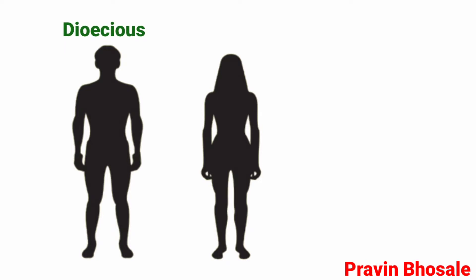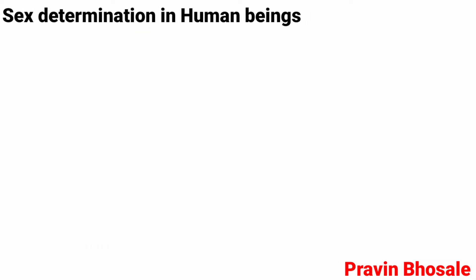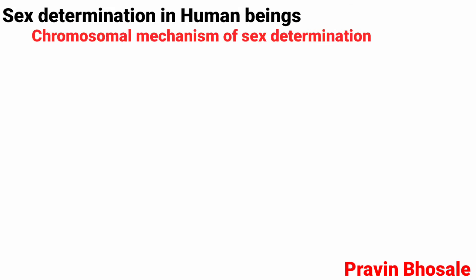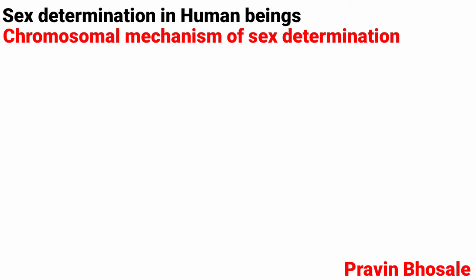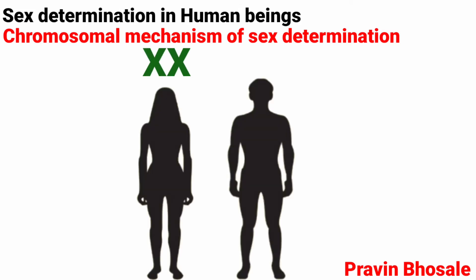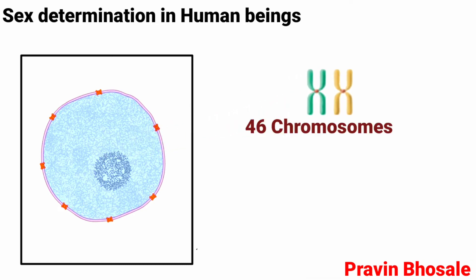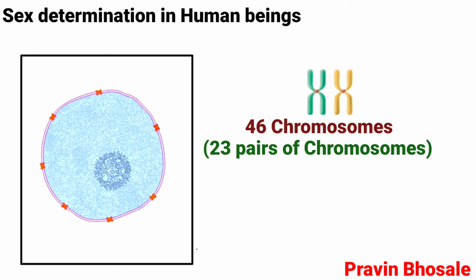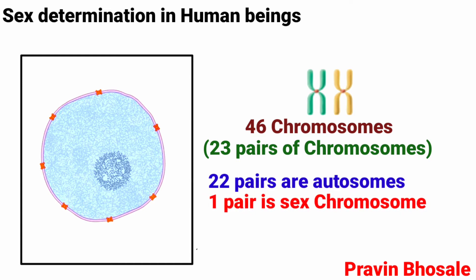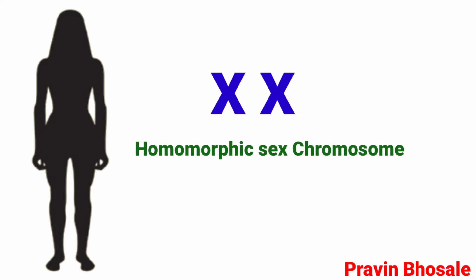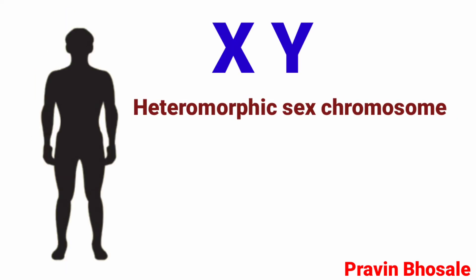Humans are dioecious. The chromosomal mechanism of sex determination in human beings is XX-XY type. In human beings, the nucleus of each somatic cell contains 46 chromosomes or 23 pairs of chromosomes. Out of these, 22 pairs are autosomes and one pair is sex chromosomes. Human female has a pair of XX, homomorphic sex chromosomes, while the male has XY, heteromorphic sex chromosomes.